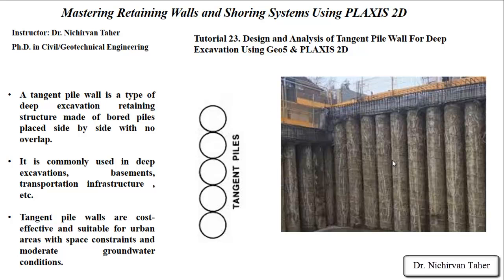As you can see in this figure, it shows a tangent pile retaining structure after construction. The tangent pile wall is a type of deep excavation retaining structure made of reinforced concrete, and the piles are placed side by side with no overlapping or gapping between two consecutive piles. This type of retaining structure is commonly used in deep excavation like basements and transportation infrastructure. It is also cost-effective and suitable for urban areas with space constraints and moderate groundwater conditions.